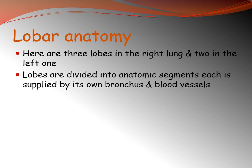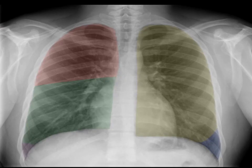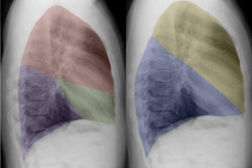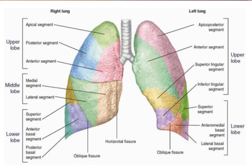What is the lobar anatomy? Each lung is divided into lobes, and each lobe is divided into many segments. Each segment has its own blood supply and bronchus. On the lateral image, the upper lobe is shown in red, the middle lobe in green, and the lower lobe in purple. Each lobe is further divided into segments — for example, the right upper lobe is divided into the apical, anterior, and posterior segments.